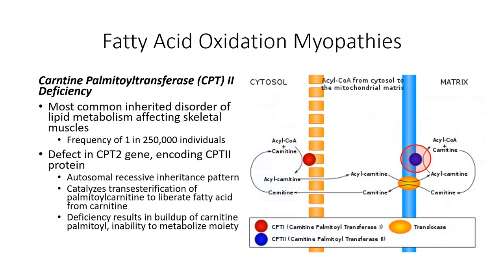The most common form of fatty acid oxidation myopathy involves mutations to the CPT2 enzyme found within the inner mitochondrial membrane. This is the carnitine palmitoyltransferase enzyme responsible for hydrolyzing the ester linkage between carnitine and the free fatty acid once it has entered the mitochondrial matrix, freeing up the free fatty acid for beta-oxidation.